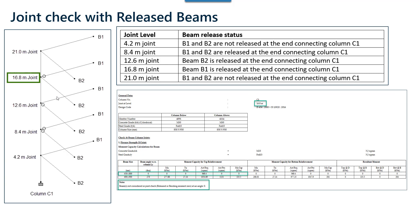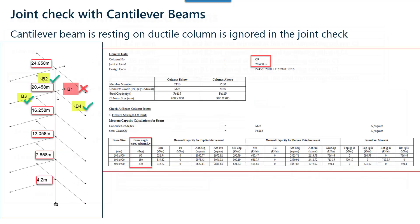At the 21-meter joint, the flexure joint check is not being performed. The last scenario is when a cantilever beam frames into a column joint along with other primary beams. In that case, the cantilever beam framing into the joint is completely ignored.